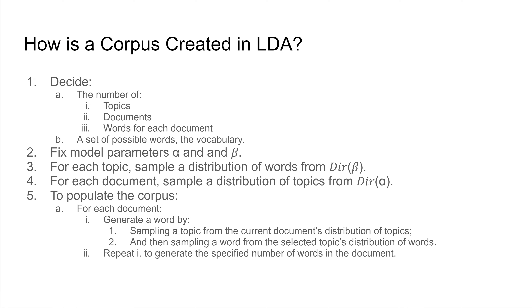To generate a word for the current document, sample a topic from the current document's distribution of topics. Once you have obtained a topic, sample a word from the selected topic's distribution of words, and insert this word into the current document. Repeat this procedure to generate all other words in the current document, and then repeat to generate the remaining documents for the corpus.